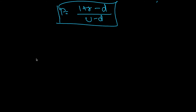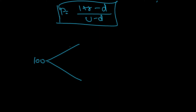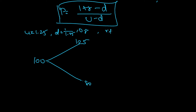Before we derive the formula, let's do one example. Let's say there is a stock at 100. Under the binomial model, the stock can either go up or come down. Let's say the uptick is 1.25, so if it is 100 it can reach 125. The downtick is 1 divided by 1.25, which equals 0.8, so the stock can come down to 80. The risk-free rate rf is equal to 10%.